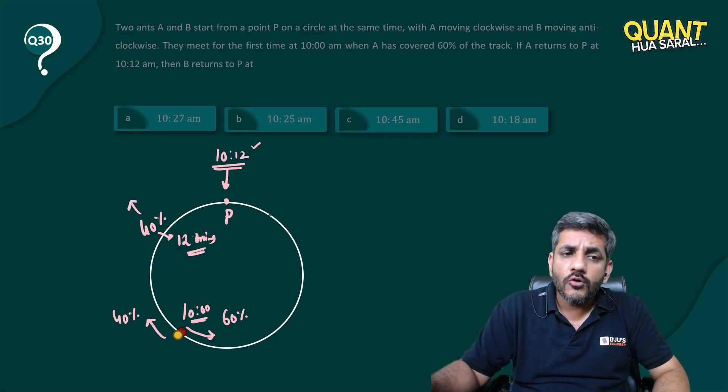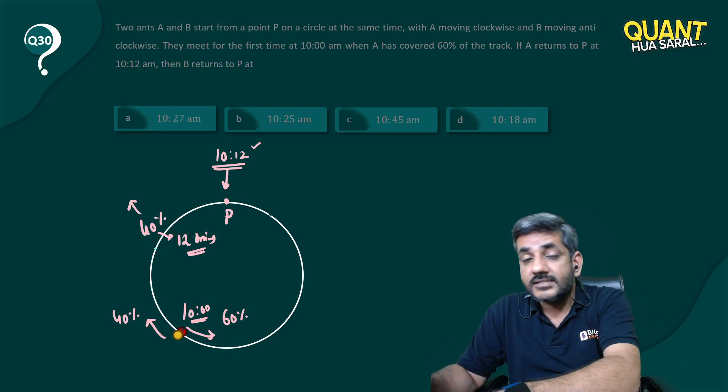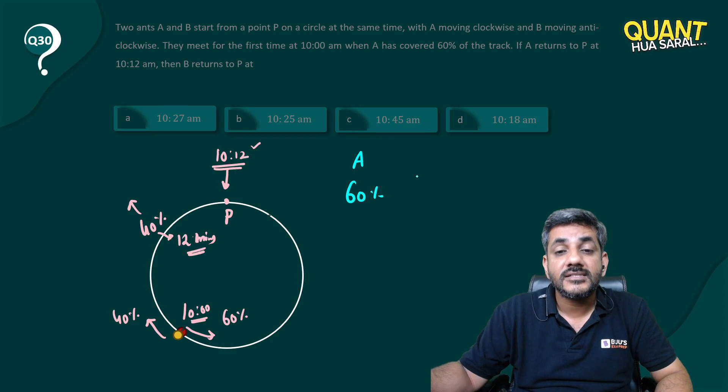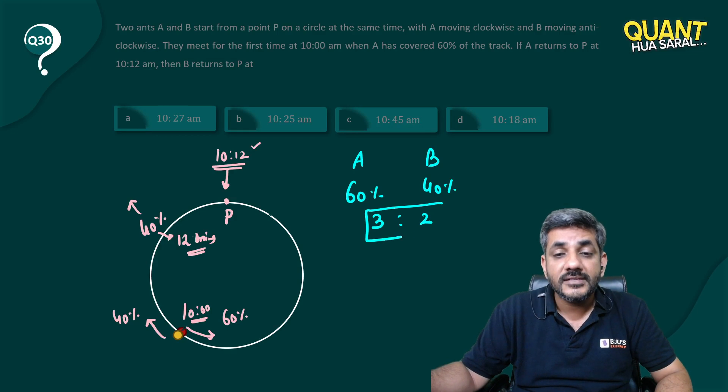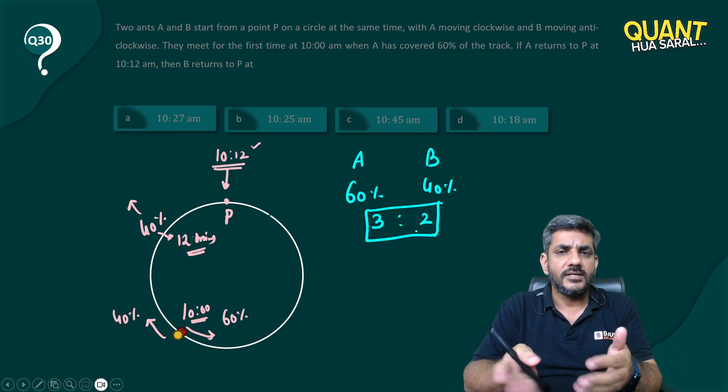Now the question is, to cover the same 40%, how much time would the other ant have taken? Initially it is given to us that when ant A covered 60% of the distance, in the same time ant B covered 40% of the distance. So can I say the ratio of their speeds is 3 is to 2? Because when you take the same time, the ratio of distance covered is the ratio of speeds.